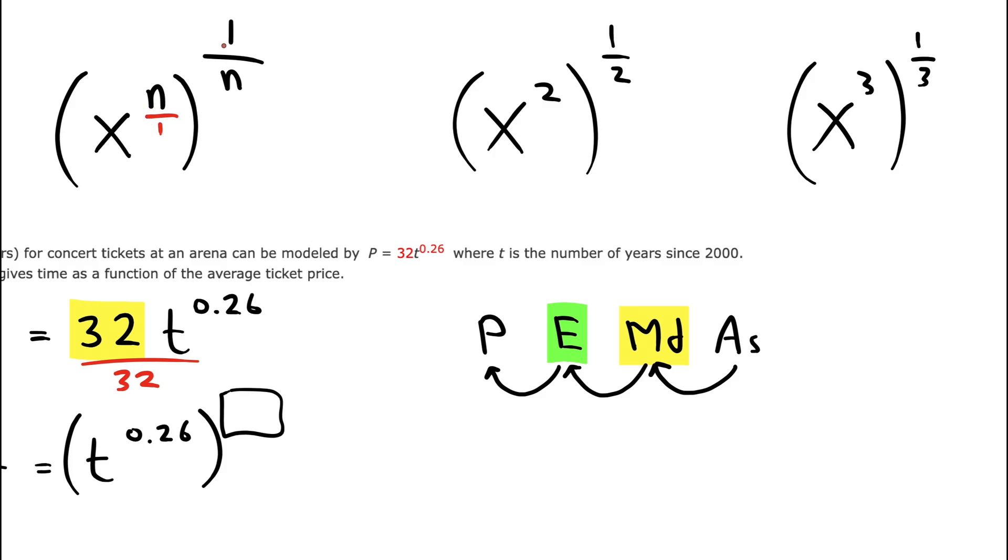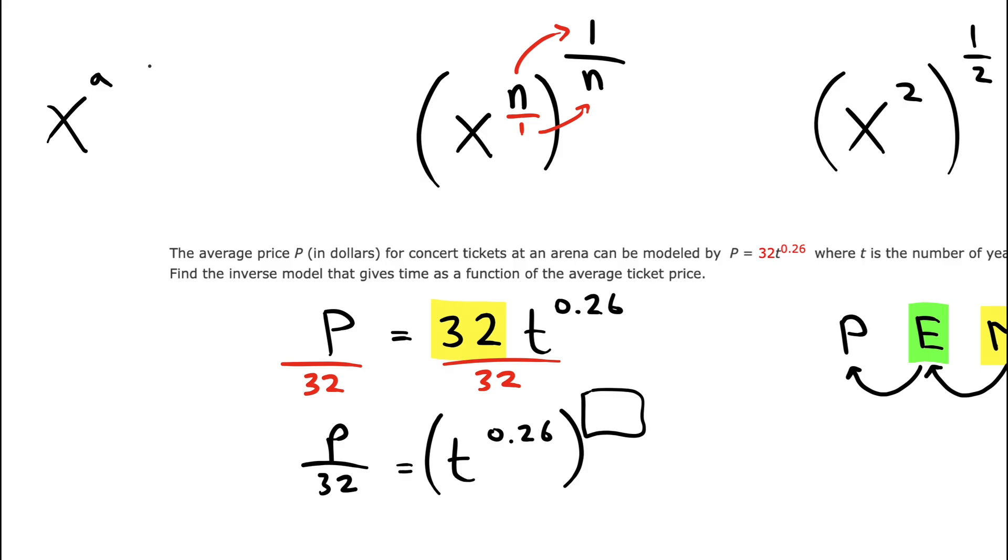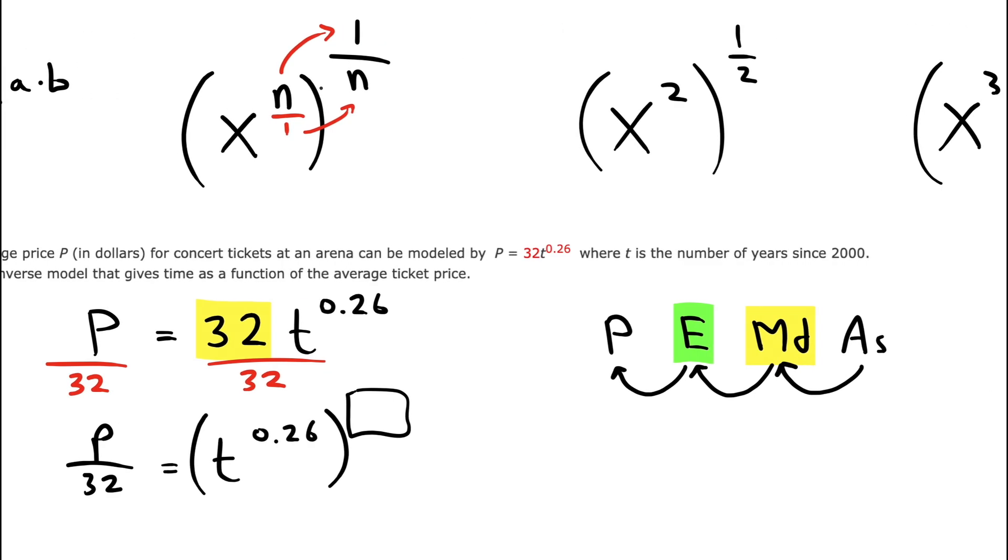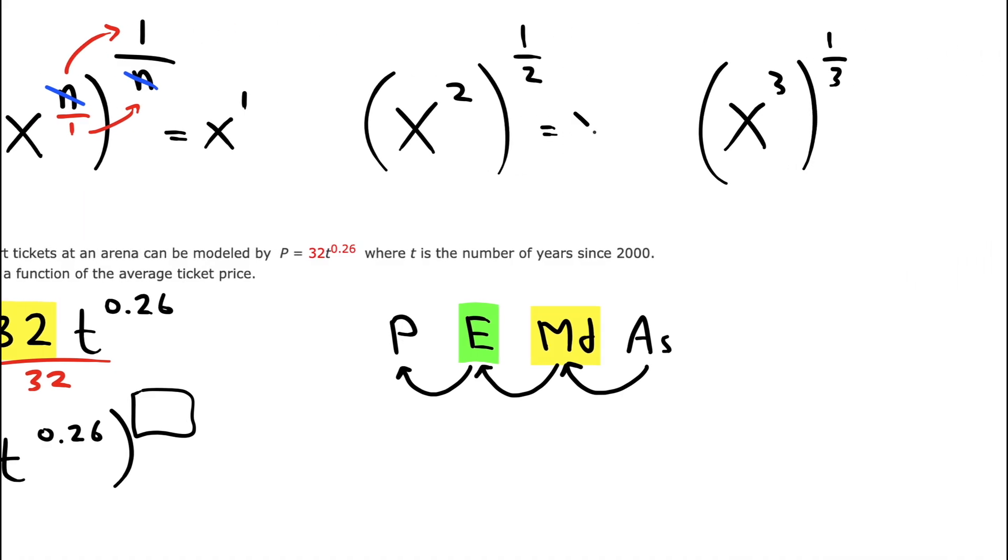The reason behind this is the rule for an exponent raised to another exponent is that we would multiply the exponents. Following the rule, x to the a raised to the b becomes x to the a times b. So because we have an n above and an n below, they would cancel, leaving us with just x to the 1. That's what would happen in both of these cases here.